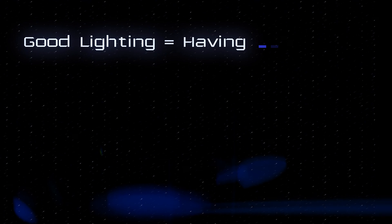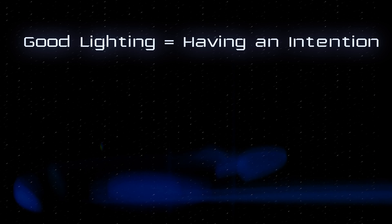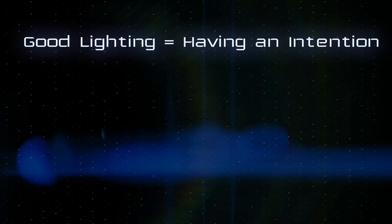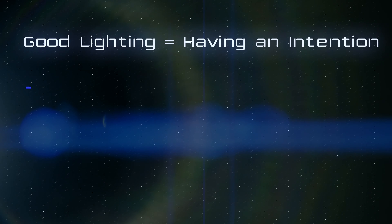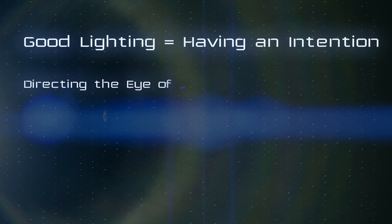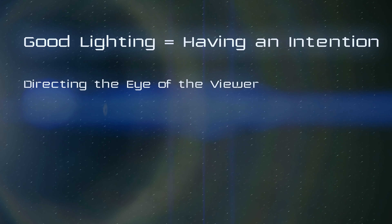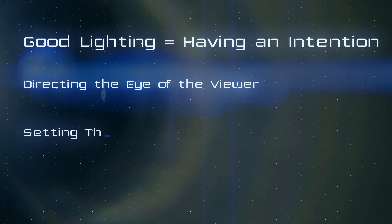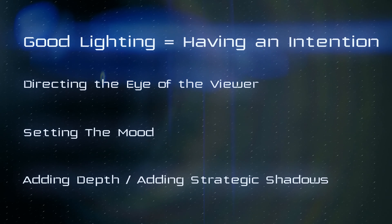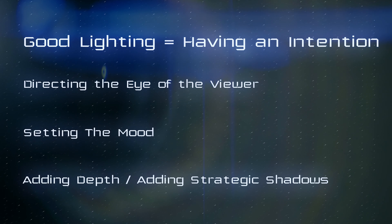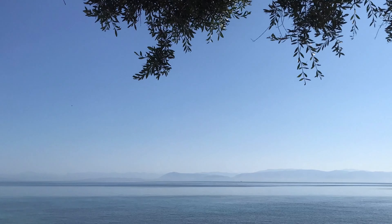Let's quickly overview some theory. It's obviously very subjective, but for me, what makes good lighting is having an intention — like directing the eye of the viewer to a certain point in the composition, setting mood, adding depth, or using strategic shadows that serve the story.